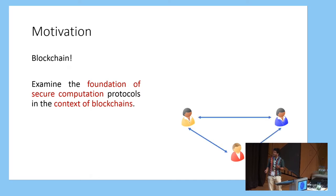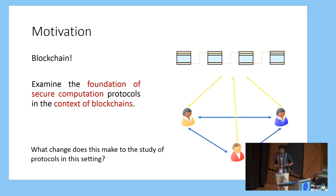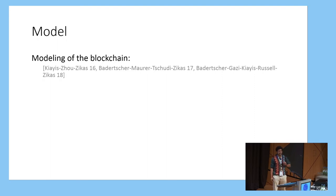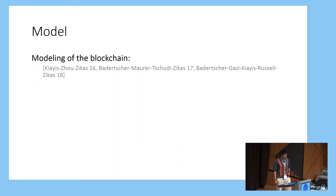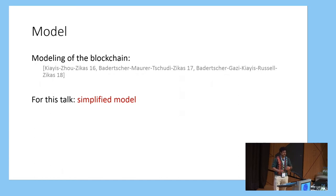So what does this mean? We want to ask what change this makes to the study of protocols in this setting, if any. The first step is establishing a model. There's been a really nice line of work recently that captures the essence of blockchains and proves that under certain assumptions these blockchains satisfy certain properties — starting with work in 2016 and still ongoing. For this talk, I'm going to consider a very simplified model, though the main ideas and challenges can be illustrated in it. The paper considers the full realistic model.